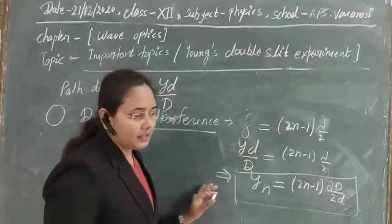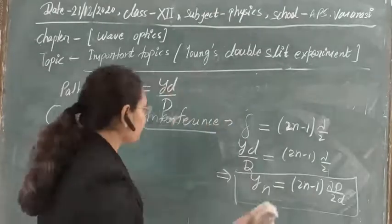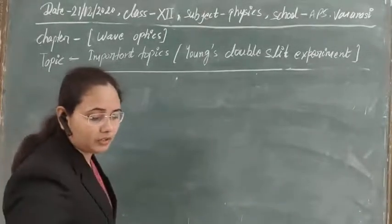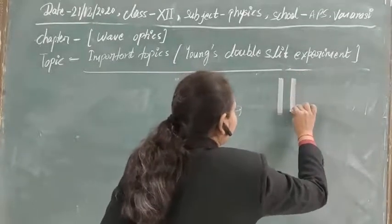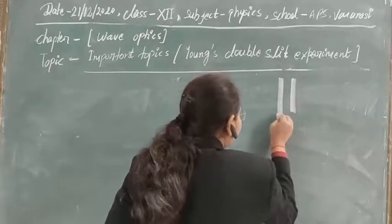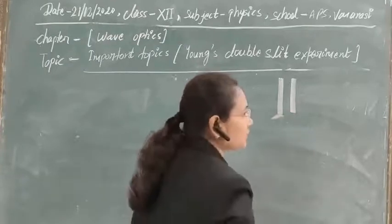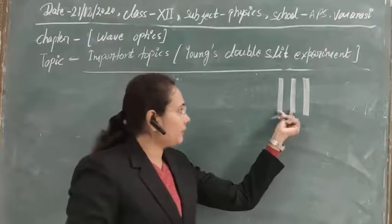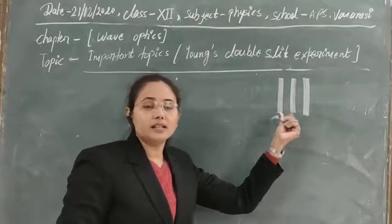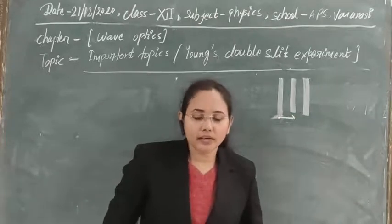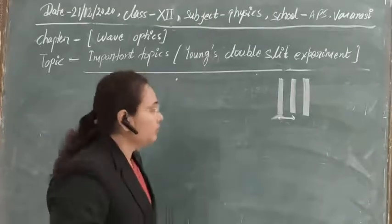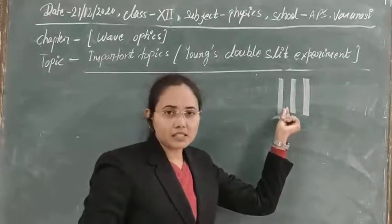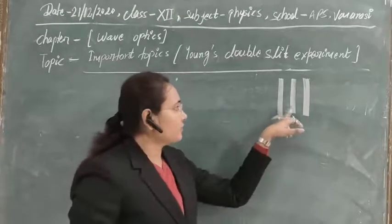Young's double slit method is a very efficient method to understand interference fringes, based on the division of wavefront method. Huygens' principle helps here a lot to understand the concept of interference. Now let's find the fringe width — the distance between two consecutive bright or dark fringes. Suppose we have first order maxima and second order maxima.